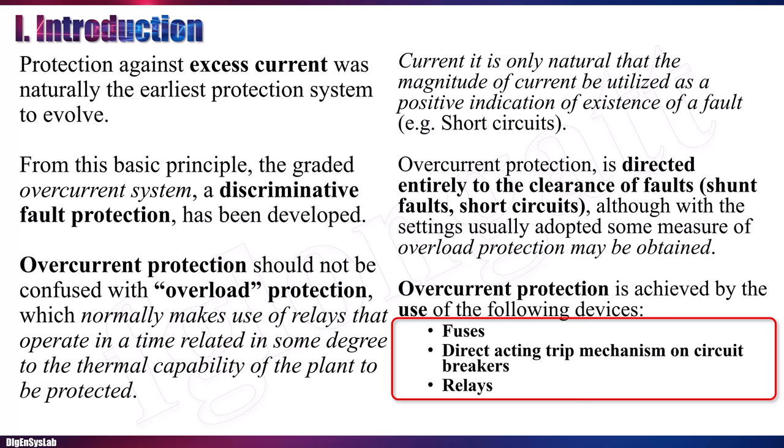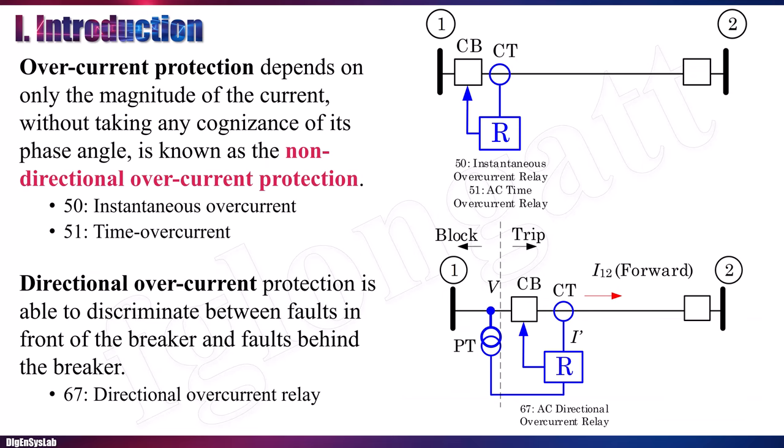There are several overcurrent protection devices in electrical power systems. The oldest and most famous is the fuse. Others include the direct acting trip mechanism on circuit breakers, used in low voltage systems, and relays at distribution level that create the trip signal to the circuit breaker. If we consider the magnitude of the overcurrent, we can define a protection mechanism called non-directional overcurrent, based on the magnitude of the current as the main indicator to differentiate normal from abnormal conditions.